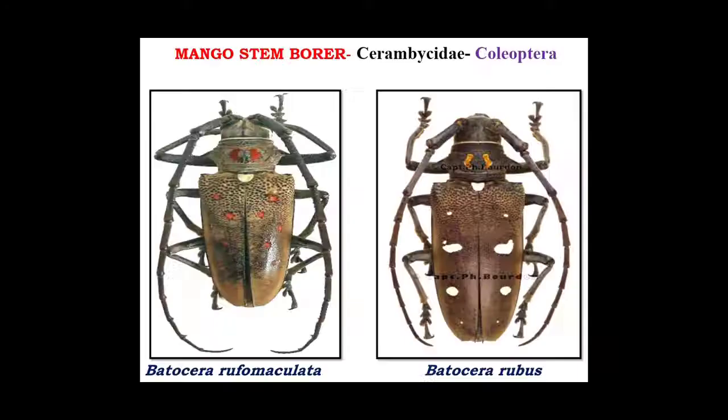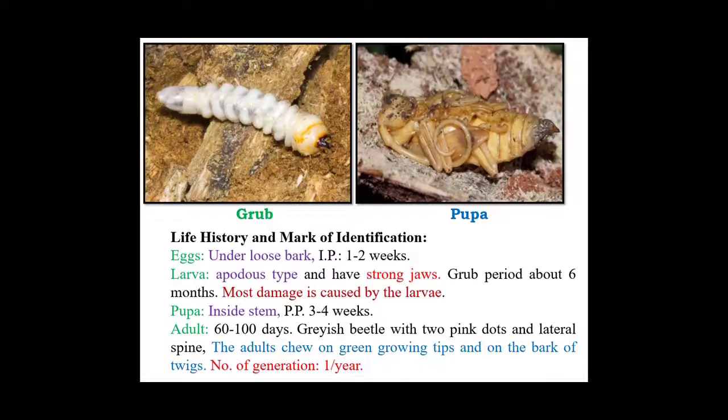The first and major pest of mango is mango stem borer. It belongs to family Cerambycidae and order Coleoptera. There are two different species: Batocera rufomaculata and Batocera rubus. These are the species which attack on the stem of a mango tree.